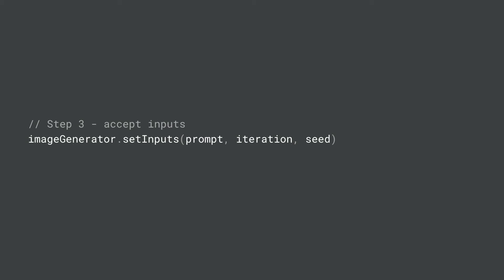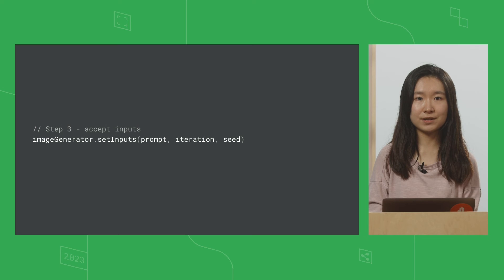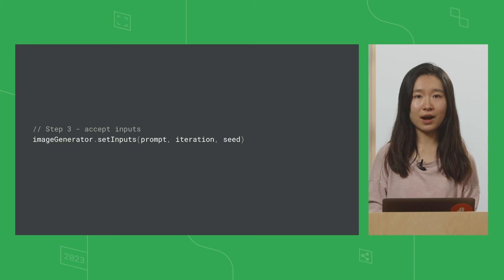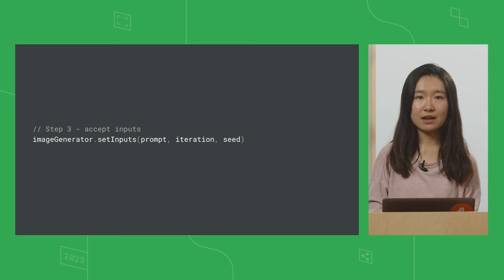The next step is to configure the input. You'll see a function called setInput, whose purpose is to set the initial parameters for the image generator when you attempt to create an image that displays intermediate steps. This function accepts three parameters: prompt, iteration, and seed. The prompt is a string that defines the generated image. Iteration is the number of iterations the task will go through while generating the image. A seed is a value that can be used to create new versions of an image based on the same prompt — using the same seed will generate the same image, which helps you test and reproduce results.